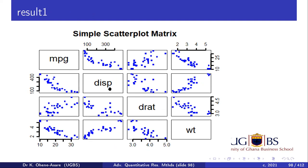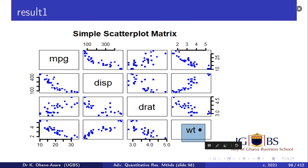This is the MPG, the displacement, the drought, and the weight. The scatter plot matrix tries to show the relationship between each one. So if you want to read the relationship between MPG and weight, all you have to do is move weights on the left and bring the MPG down where they meet. That's where you read the story. You can see that just between MPG and weights, there is a negative relationship.